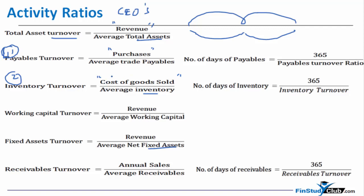For purchase, it is best to use credit purchases if given. For receivable turnover, the sales figure is best taken as credit sales, because if a sale was a cash sale, the receivable never arose from it — receivables only come from credit sales. However, in 99% of exam cases you will not be given credit sales, so as a proxy you assume all sales are credit and take annual sales and annual purchases accordingly.